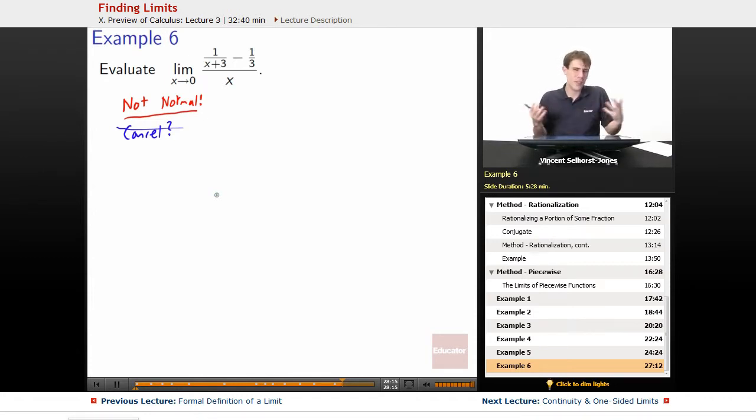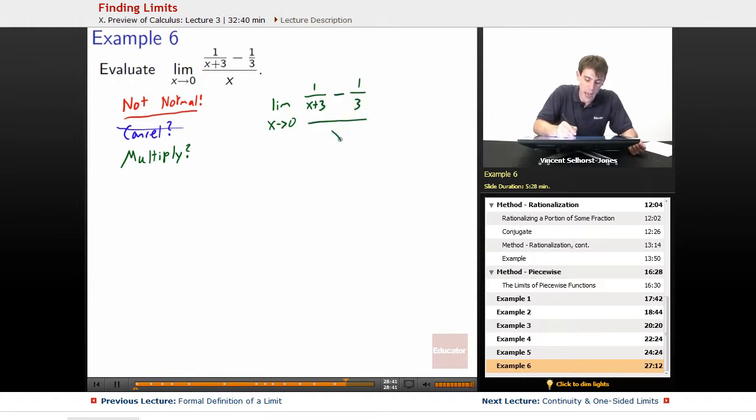Well, what would make the top, the thing that's really strange about this is we've got fraction over fraction, right? We don't like fractions in fractions. So how can we get rid of some of those fractions by multiplying? Well, the easiest way to get rid of the denominator in the top is to just multiply by the denominators in the top. So if we multiply limit, I'll rewrite the thing out. Limit as x goes to 0 of 1 over x plus 3 minus 1 over 3 all over x.